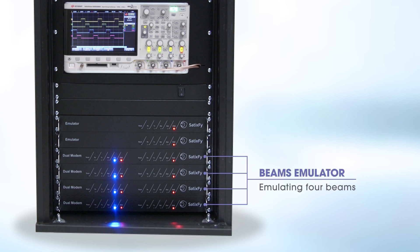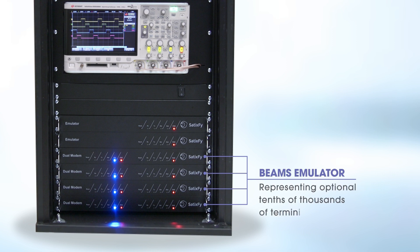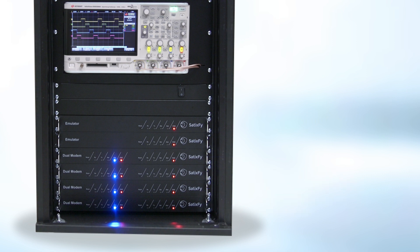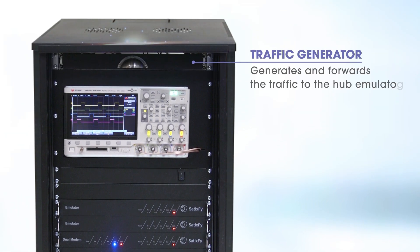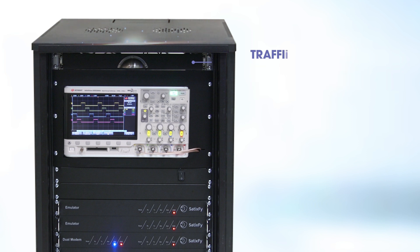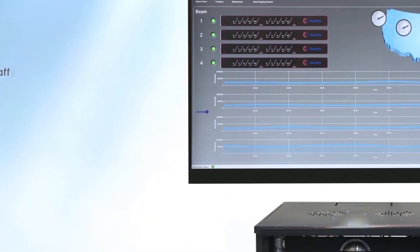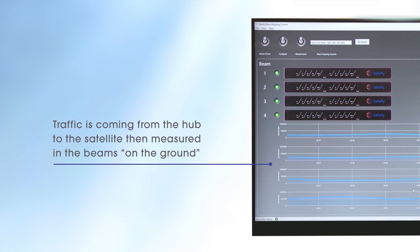Beams Emulator: emulating four beams. Each beam contains two terminals, representing optional tens of thousands of terminals. Traffic Generator: generates and forwards the traffic to the hub emulator. Traffic is coming from the hub to the satellite, then measured in the beams on the ground.